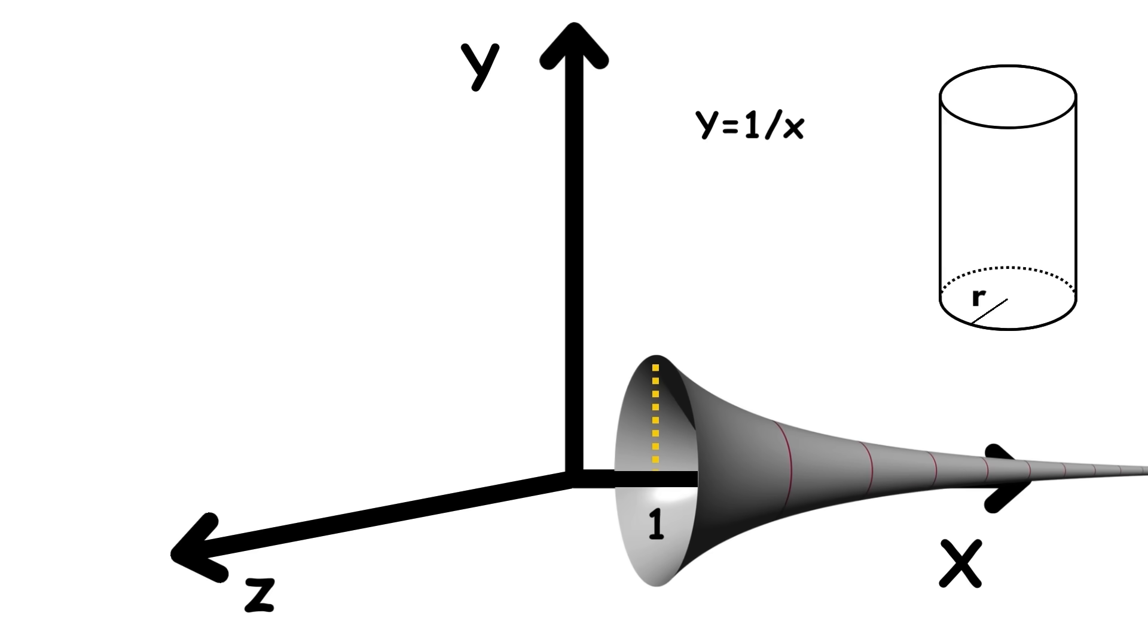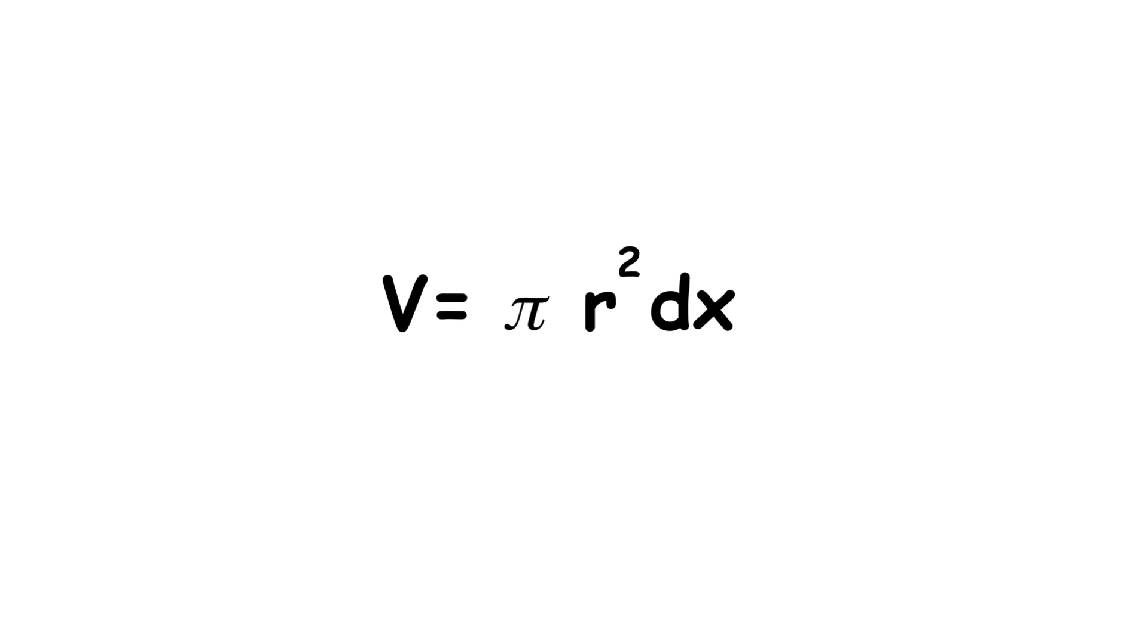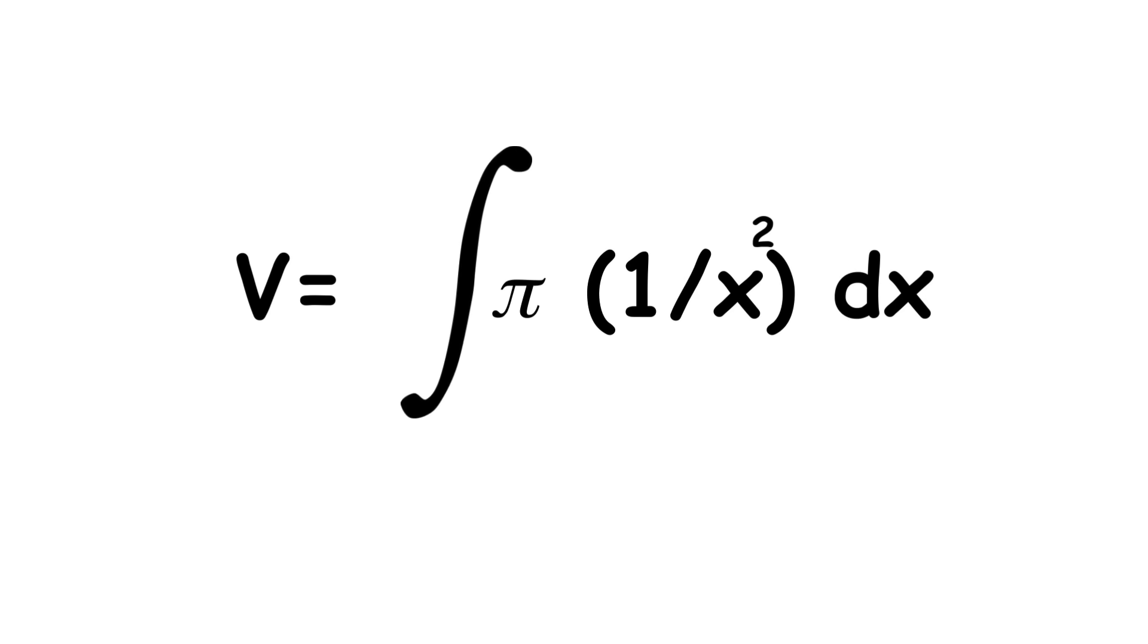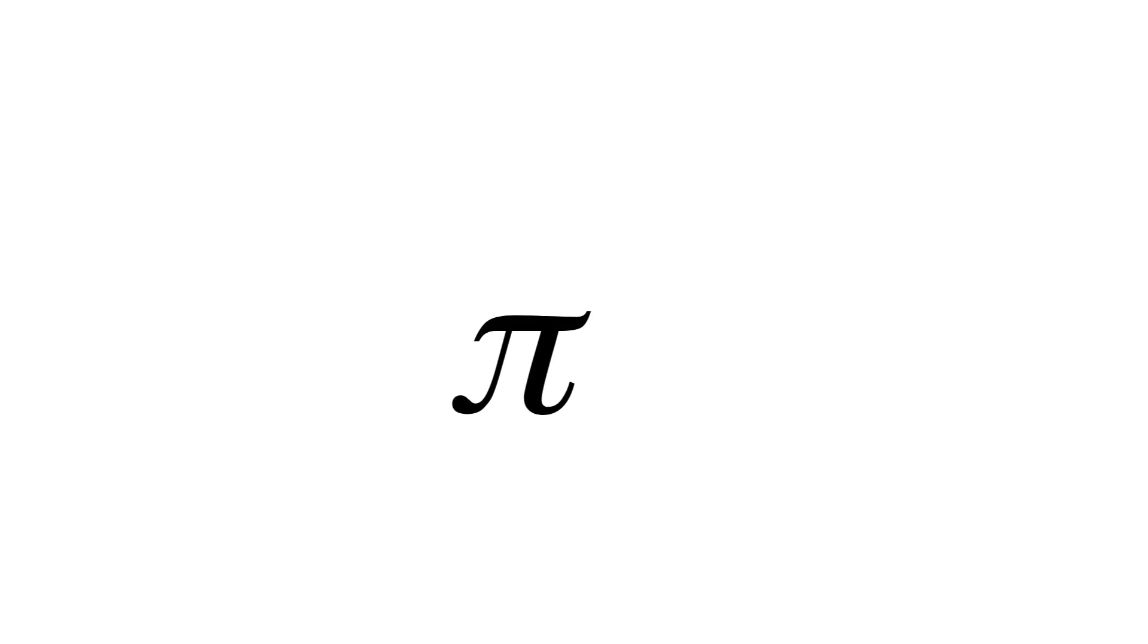The radius at each point is just the distance between the x-axis and the graph of the function 1 over x, so we can replace r with 1 over x. So the volume of each cylinder is approximately pi times 1 over x squared times dx. And we just have to integrate this from 1 to infinity, which gives us pi. So the volume of this region is pi.